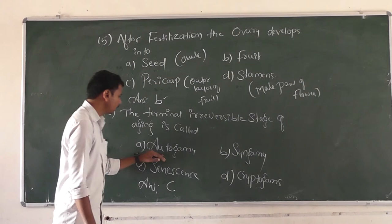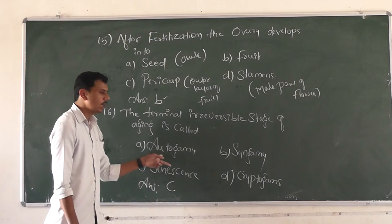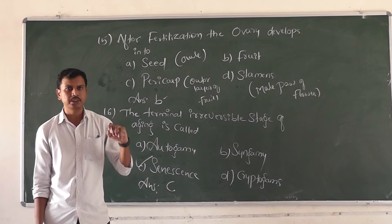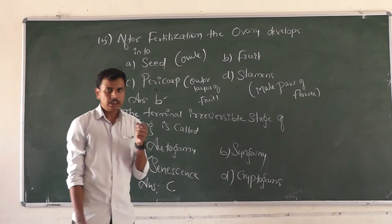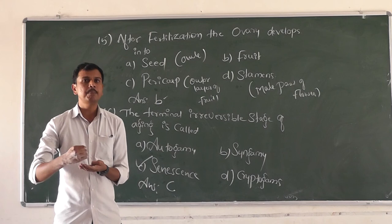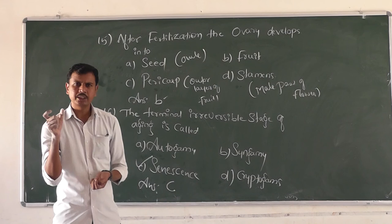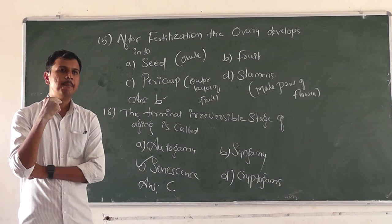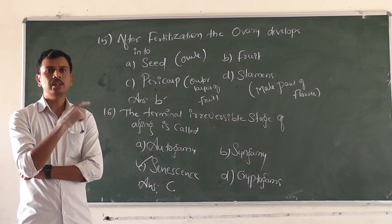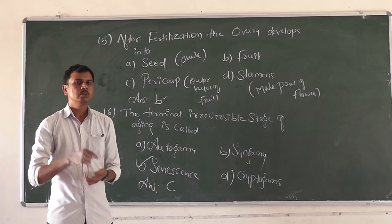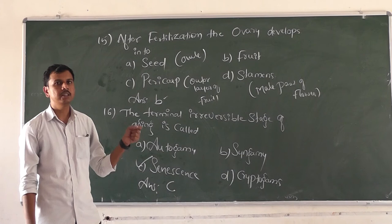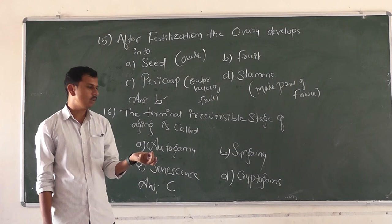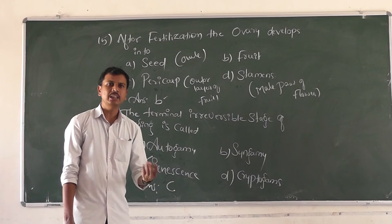Autogamy means self-pollination or self-fertilization — pollen grains transfer from the male part (anther/stamen) to the female part (pistil or stigma) of the same flower. The transfer of pollen grains from male part to female part of the same flower is called autogamy.